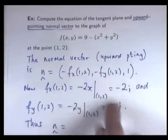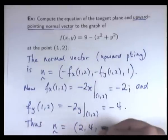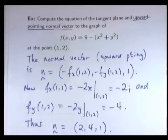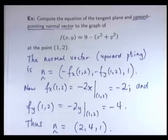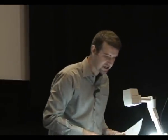Now we want to take the negatives of these, so it's going to be 2, 4, and 1. So we've calculated the normal vector, now we're just after the equation of the tangent plane.